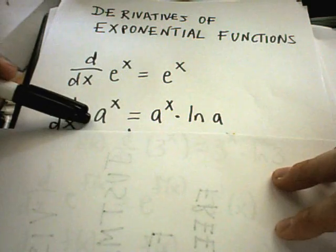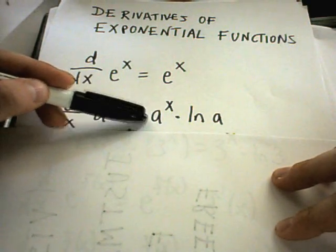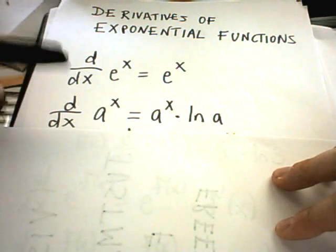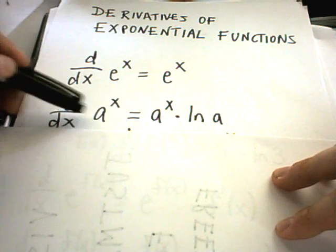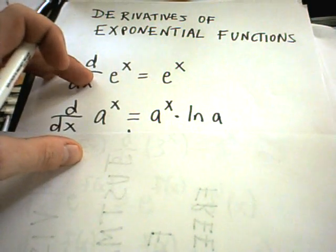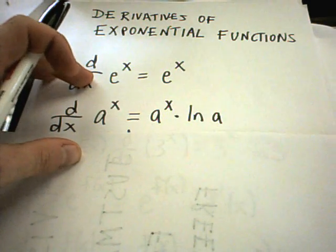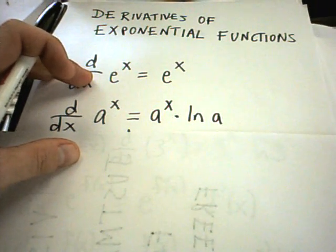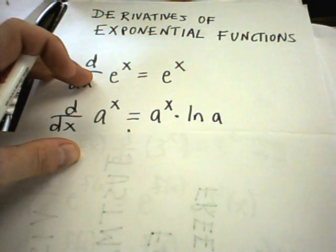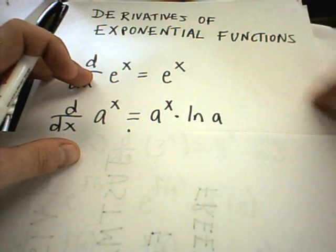Just like the derivative of e to the x is e to the x, the derivative of a to the x is a to the x. But you also have to tack on the natural logarithm of the base, in this case a. And that's also valid for the other case as well. You could tack on a natural logarithm of e, but recall that the natural logarithm of e is just one. So that's why they leave it off here.